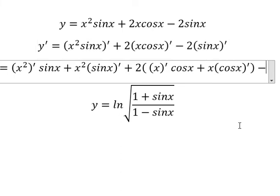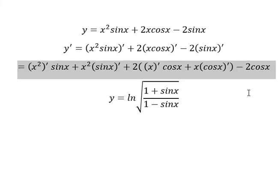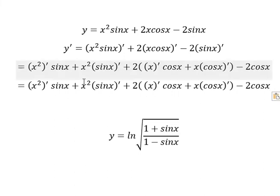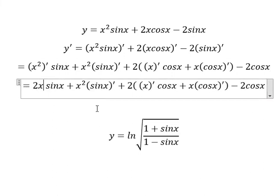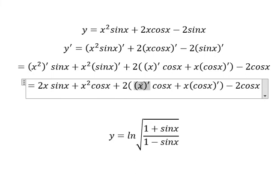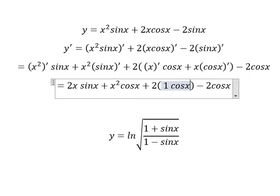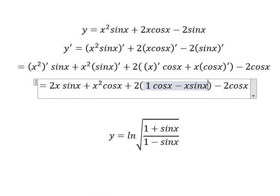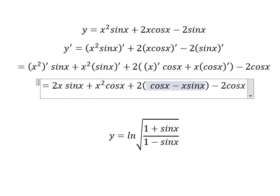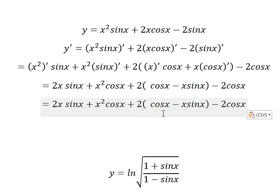The first derivative of sine x gives us cosine x. For the other terms, we have 2x and cosine x, then 1 and negative sine x. We simplify to get 2x cosine x and x sine x.